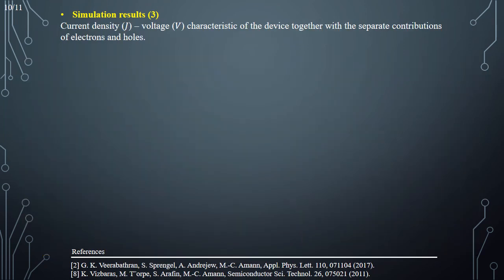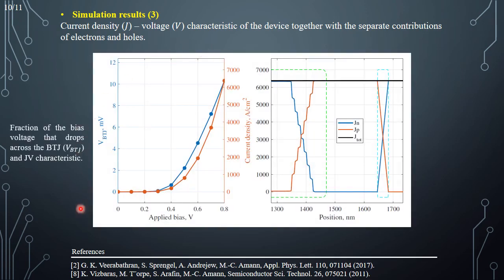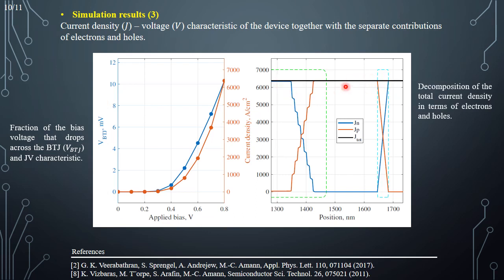It is also possible to derive the J-V characteristic of the device together with other interesting quantities. In the left graph, we can see two curves: the red curve is the J-V characteristic of the device as a function of the applied bias voltage, while the blue curve is the voltage drop across the buried tunnel junction alone as a function of the applied bias. In the right graph, we can see the decomposition of the total current density at 0.8 volts in terms of electron and hole contributions — the blue one is the electron current density, while the red one is the hole current density.